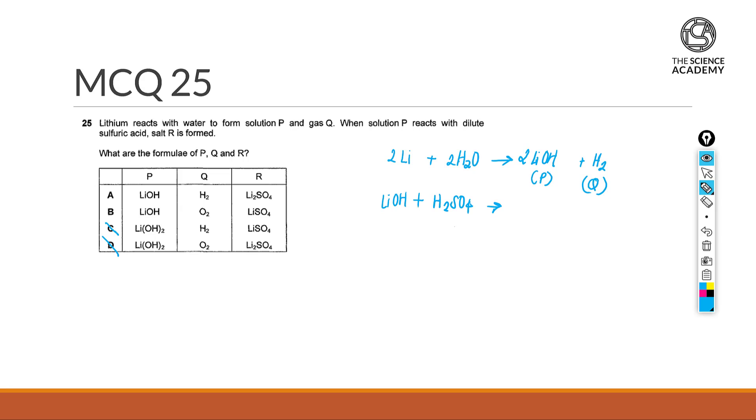In this case, we know that an alkaline plus an acid will give you salt and water. So Li2SO4 plus water H2O. In this case, this is the R that we're looking at.